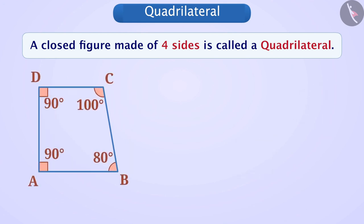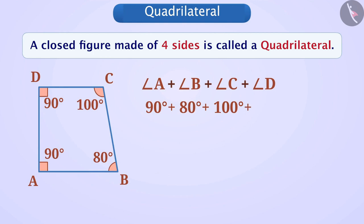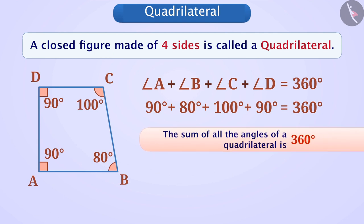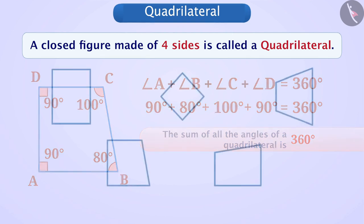If we take any quadrilateral and add the measures of its angles, then the answer will be 360 degrees. This is true for each quadrilateral. Therefore, we can say that the sum of all angles of a quadrilateral is 360 degrees. This is an important property of a quadrilateral.